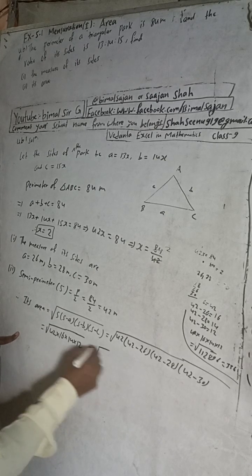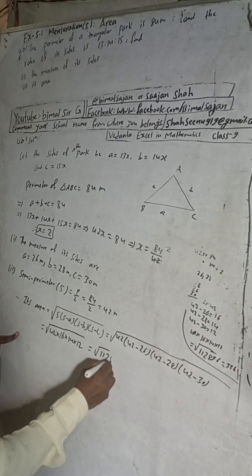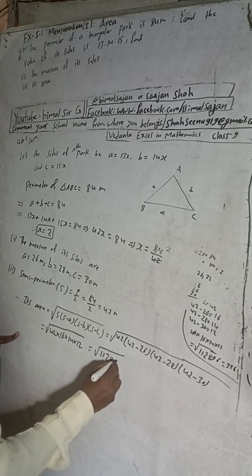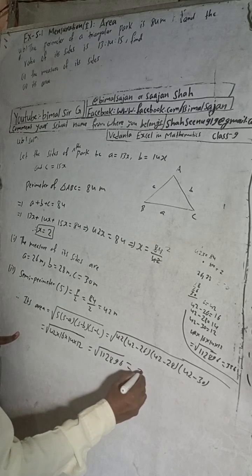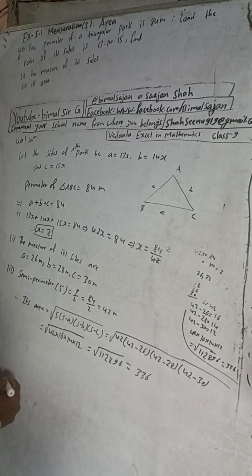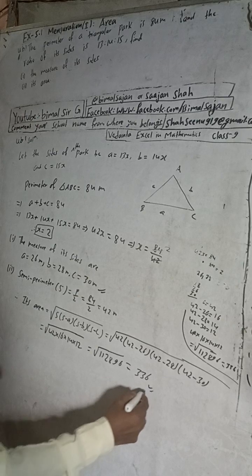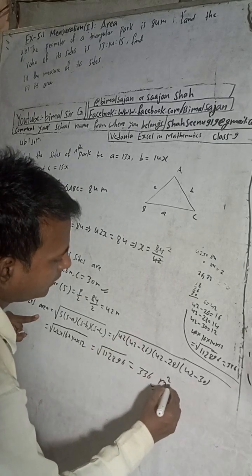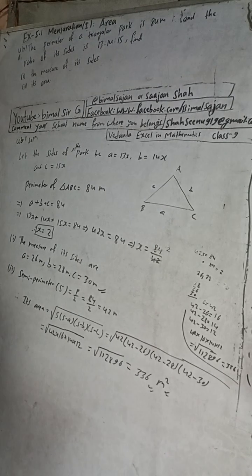When you multiply all of these together you get 112,896, and the square root of this is 336. The book answer is also 336. So the required area is 336 square meters. Don't forget the unit — square meters — otherwise 0.5 marks will be cancelled by your teachers.